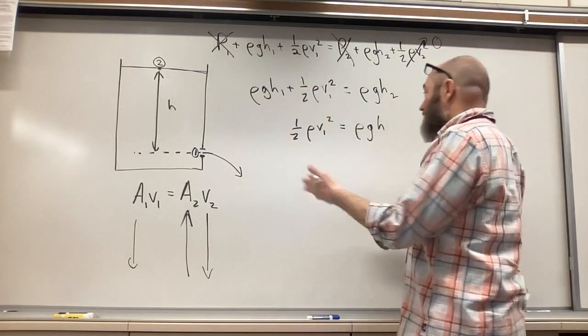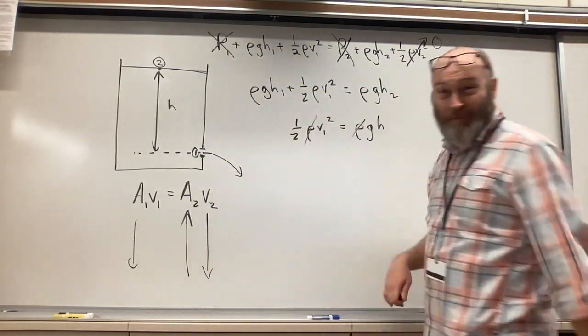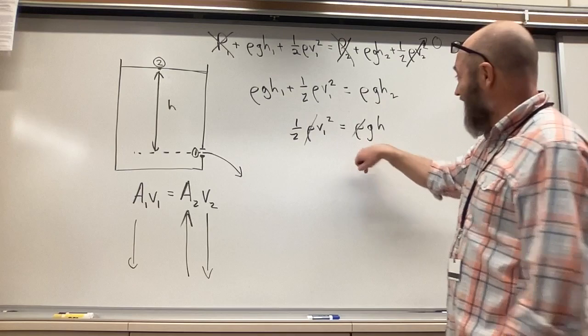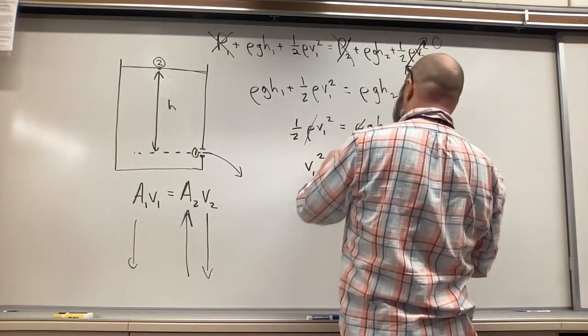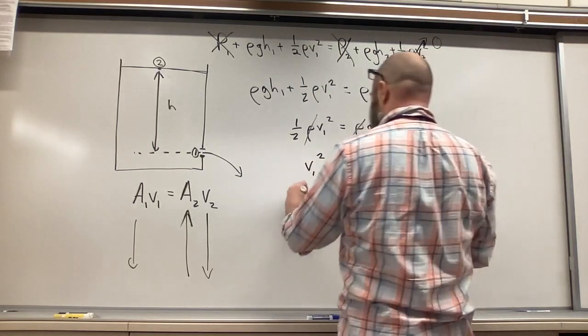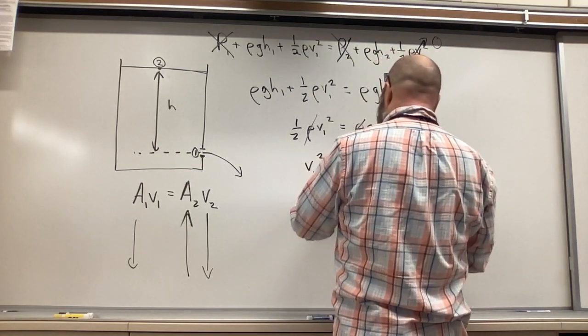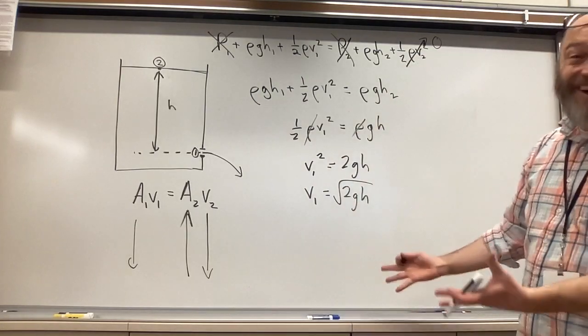So then I would end up with one half rho v1 squared equals rho gh, where, again, that distance, and then do some algebra, we're going to do some canceling, and then you end up with v squared equals 2gh, v1 equals square root of 2gh, and there you go.